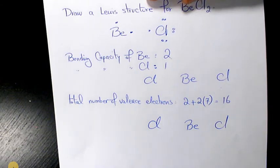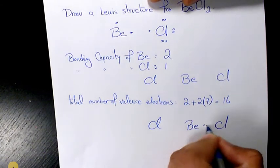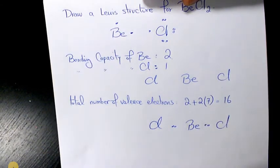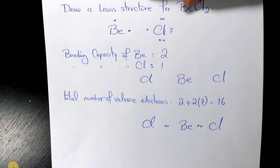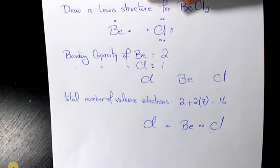Every two of these dots represents a bonding electron pair that forms a single covalent bond — one, two; one, two — so we have two single covalent bonds between the two atoms like that.